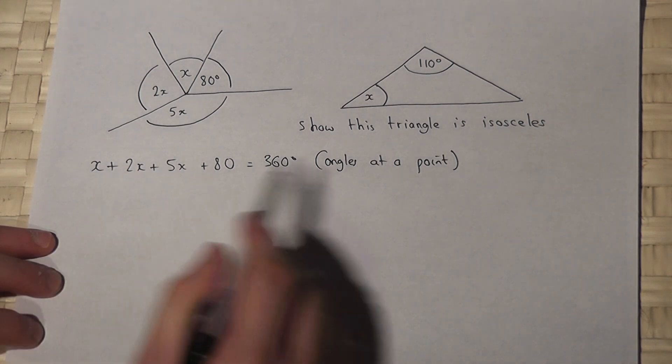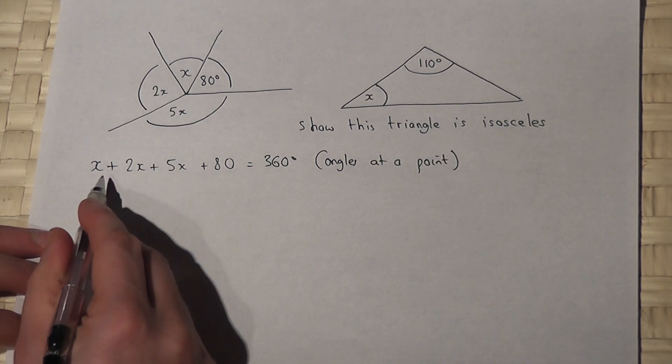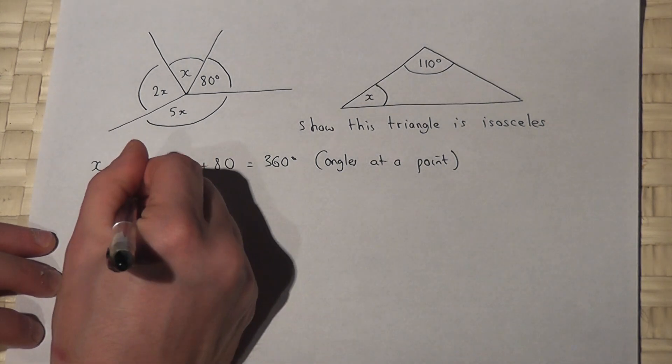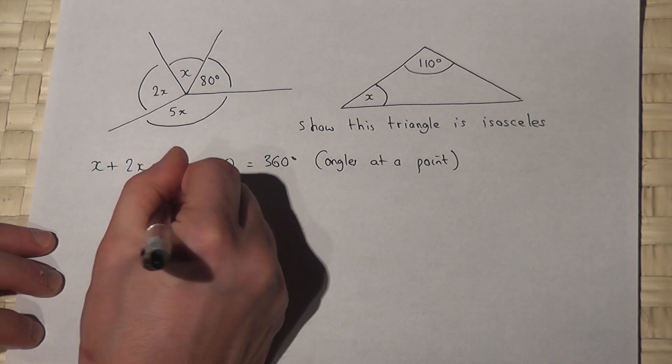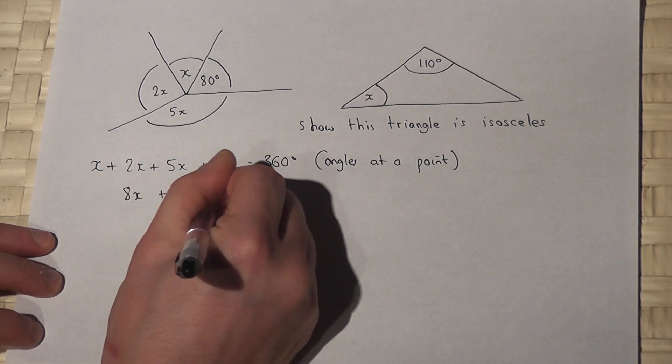So this can then be simplified. X, 2X, 5X is 8X plus 80 equals 360.